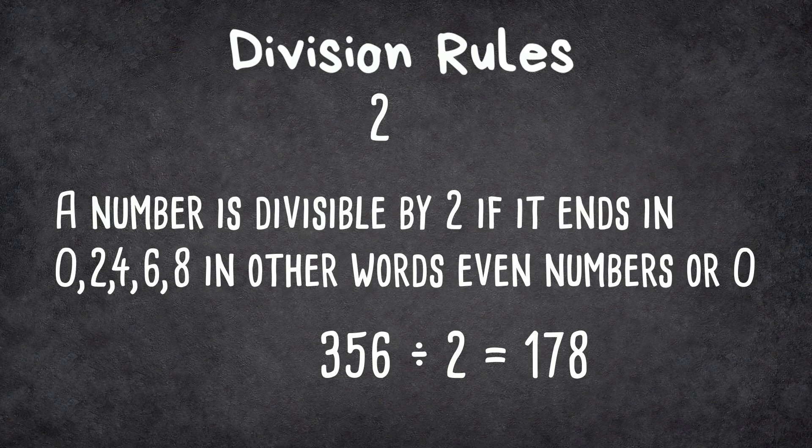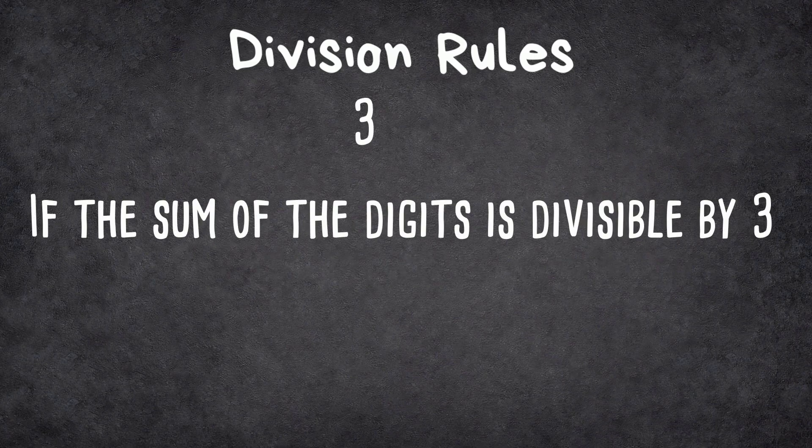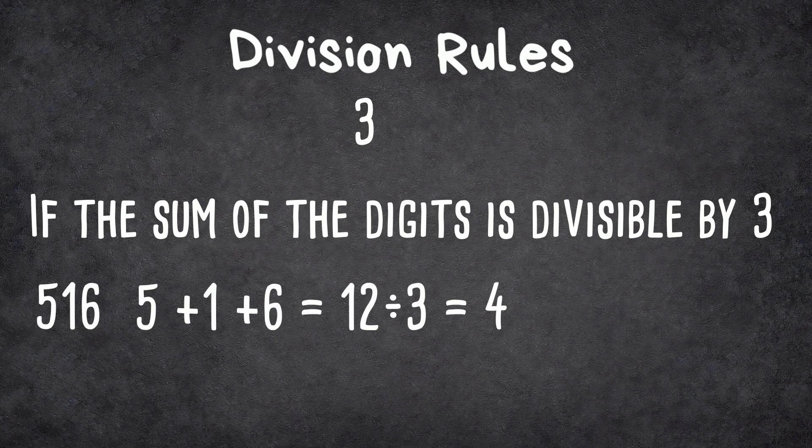A number is divisible by 3 if the sum of its digits is divisible by 3. So 516: 5 plus 1 plus 6 equals 12, and 12 is divisible by 3.